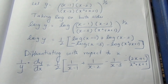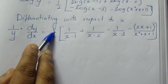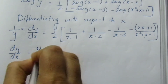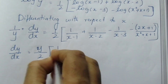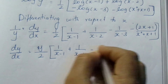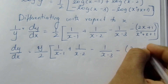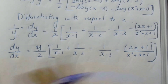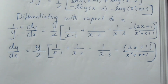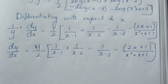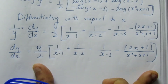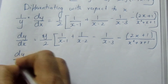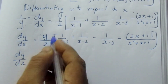So, dy/dx is equal to y over 2 times [1/(x−1) plus 1/(x−2) minus 1/(x−3) minus (2x+1)/(x²+x+1)]. You can take the LCM and simplify further if needed. Now substituting y back as the root expression, dy/dx equals root of that full value.